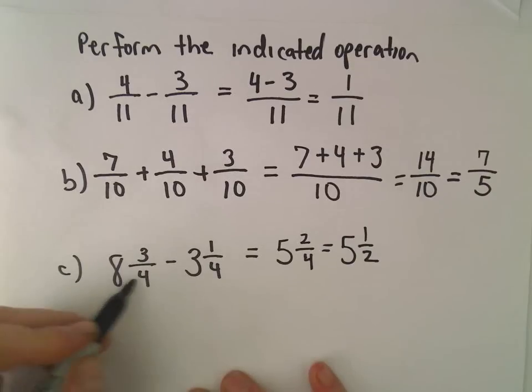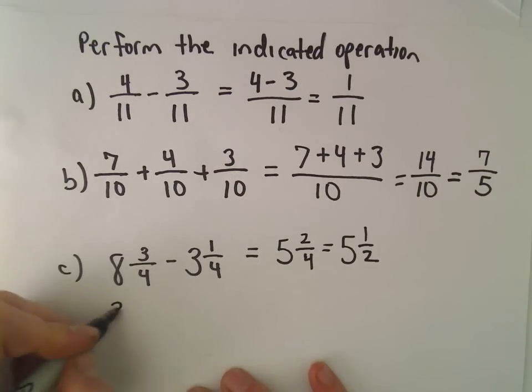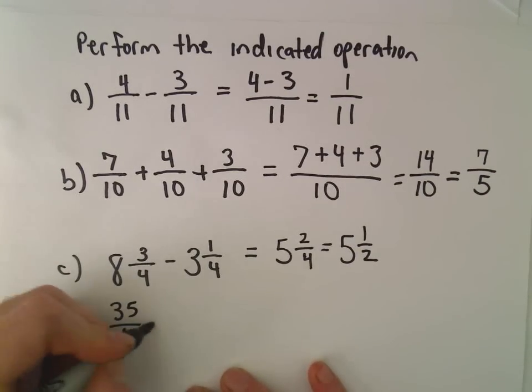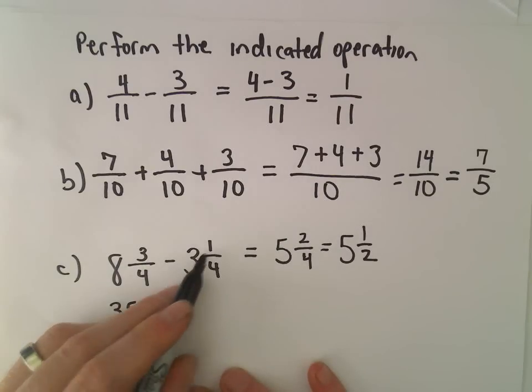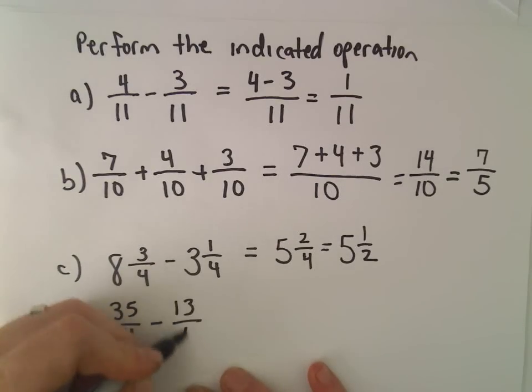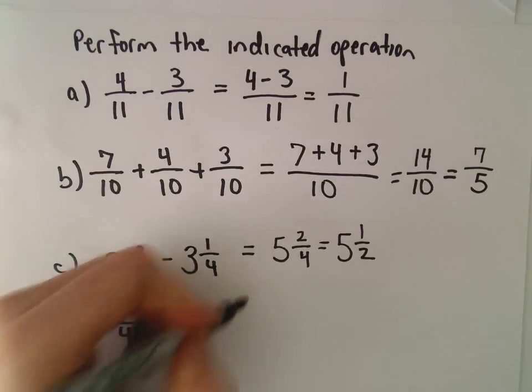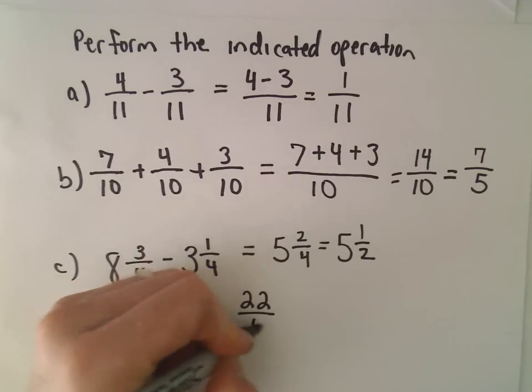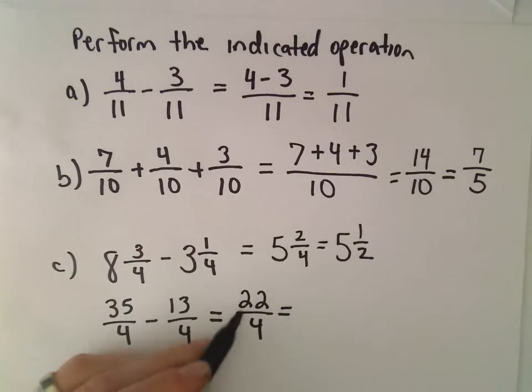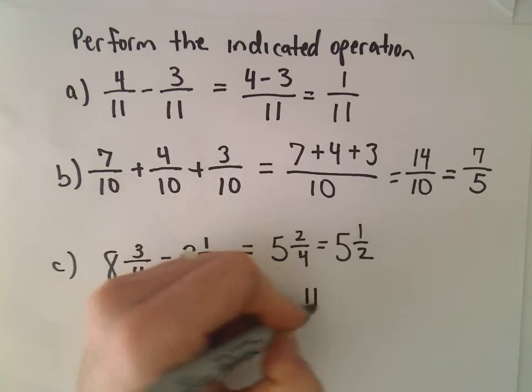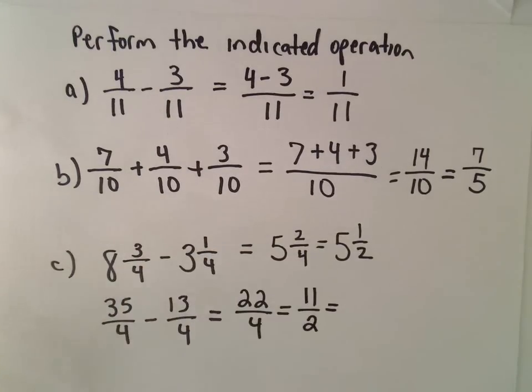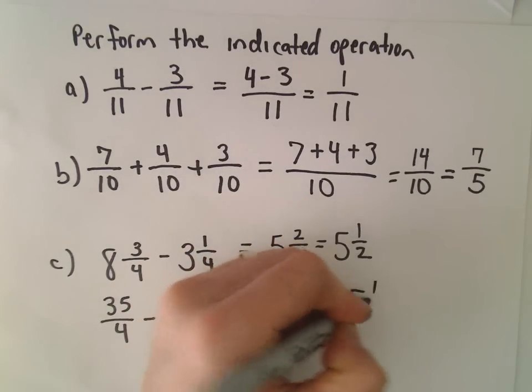I have a tendency to always just turn them back into fractions. So 4 times 8 is 32 plus 3 is 35/4. 4 times 3 is 12 plus 1 is 13/4. And now we can do the subtraction: 35 minus 13, that's going to leave us with 22/4, which reduces to 11/2, which if we made it into a mixed number is 5 1/2.